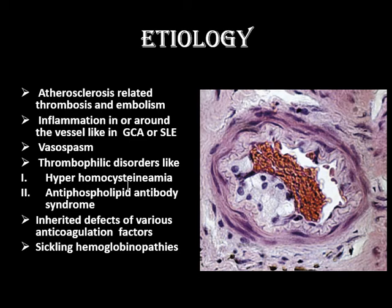Thrombophilic disorders are important in younger patients. Whenever you encounter a patient who comes with retinal artery occlusion, we have to rule out hyperhomocysteinemia and anti-phospholipid antibody syndrome. There can be inherited defects of various anticoagulation factors, and it is also not uncommon in sickle cell disease. We need to rule out the sickling hemoglobinopathies as well.